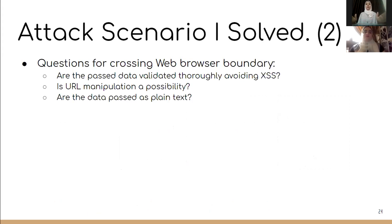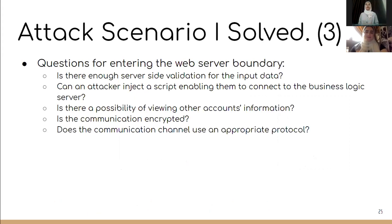The first set of questions to ask the developer when data crosses the web browser trust boundary: Are the data passed being validated carefully to avoid cross-site scripting attacks? Is URL manipulation a possibility? Are the data passed as plain text or encrypted? The second set of questions for crossing the web server boundary: Is there enough server-side validation for the input data? Can an attacker inject a script to connect to the business logic server? Is there a possibility of viewing other account information? Is the communication encrypted, and does it use an appropriate protocol?